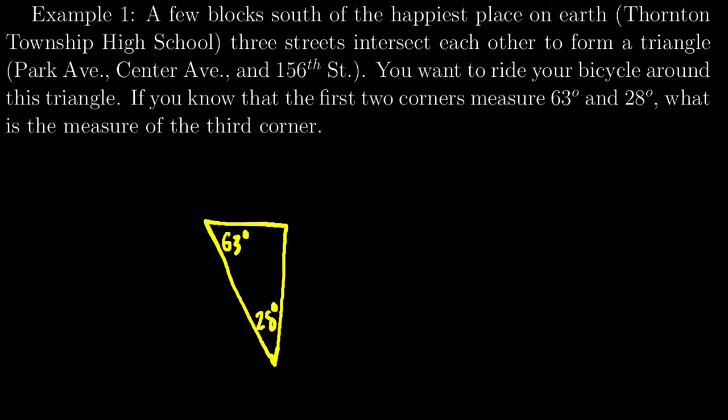We want to find this missing corner here, and we know that the interior of a triangle—the three interior angles—have to add up to 180 degrees. So I'll do x plus 63 plus 28 equals 180. 63 plus 28 is 91.